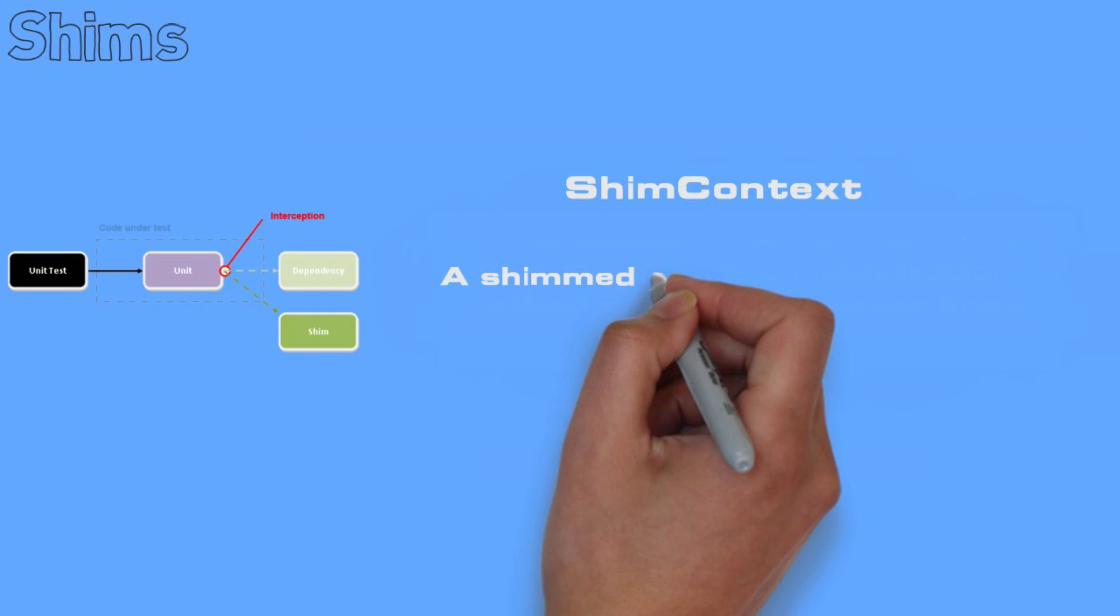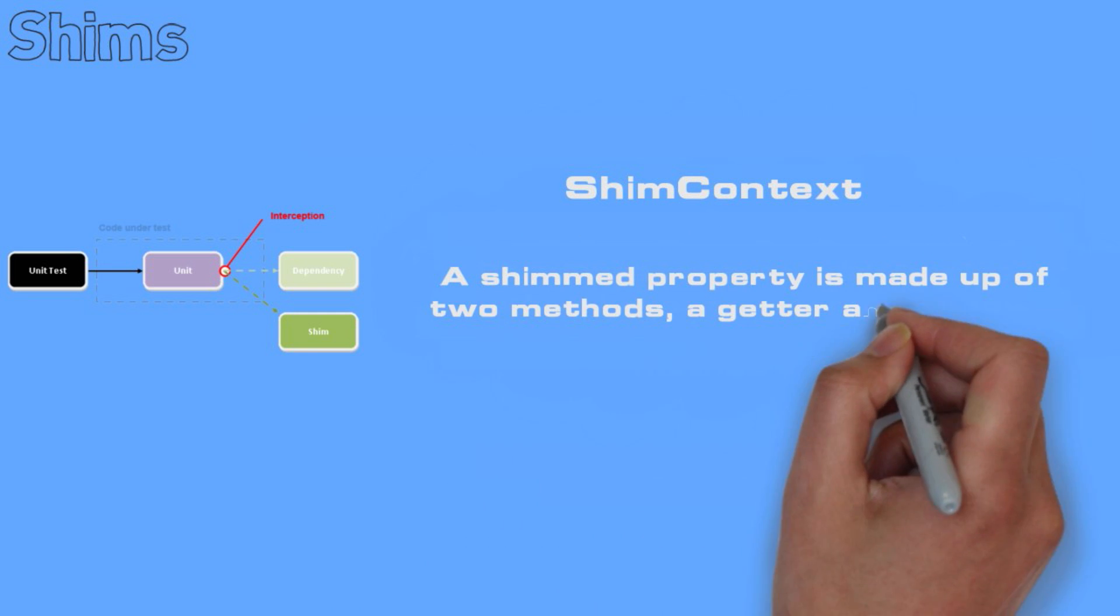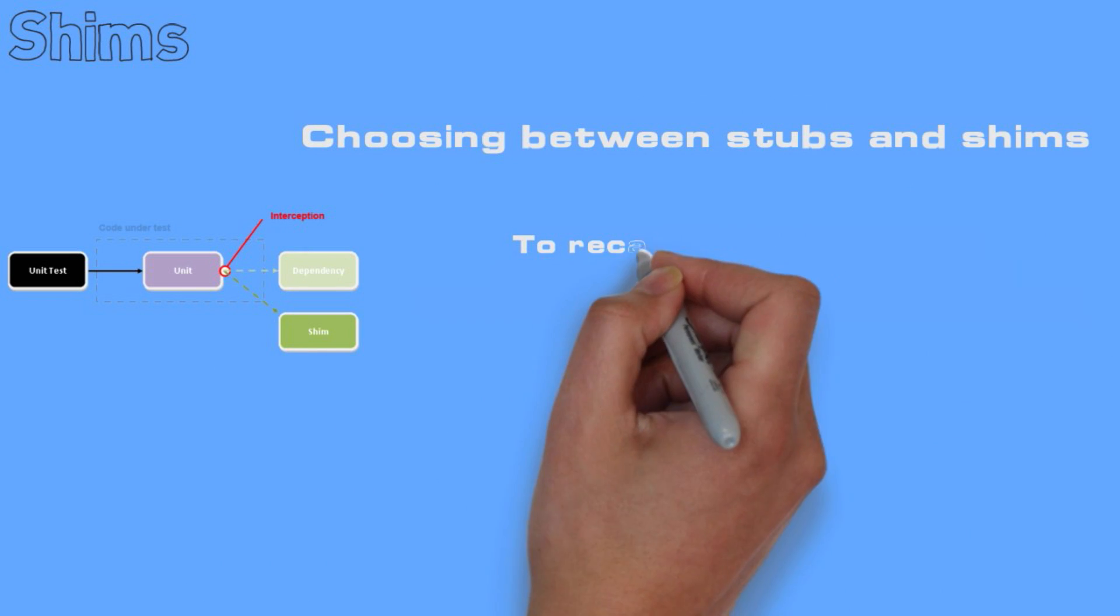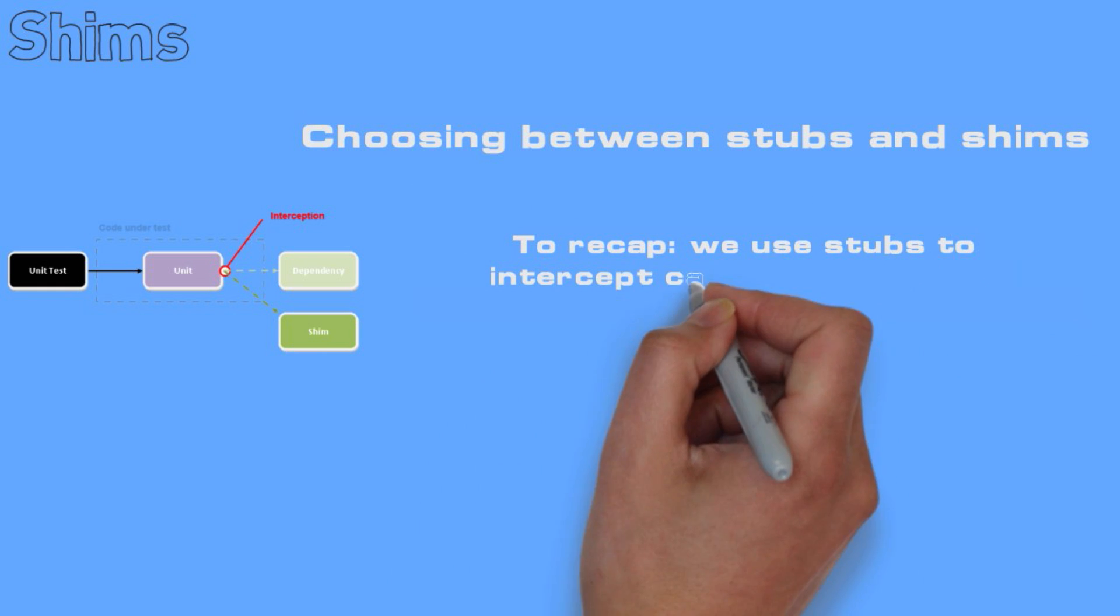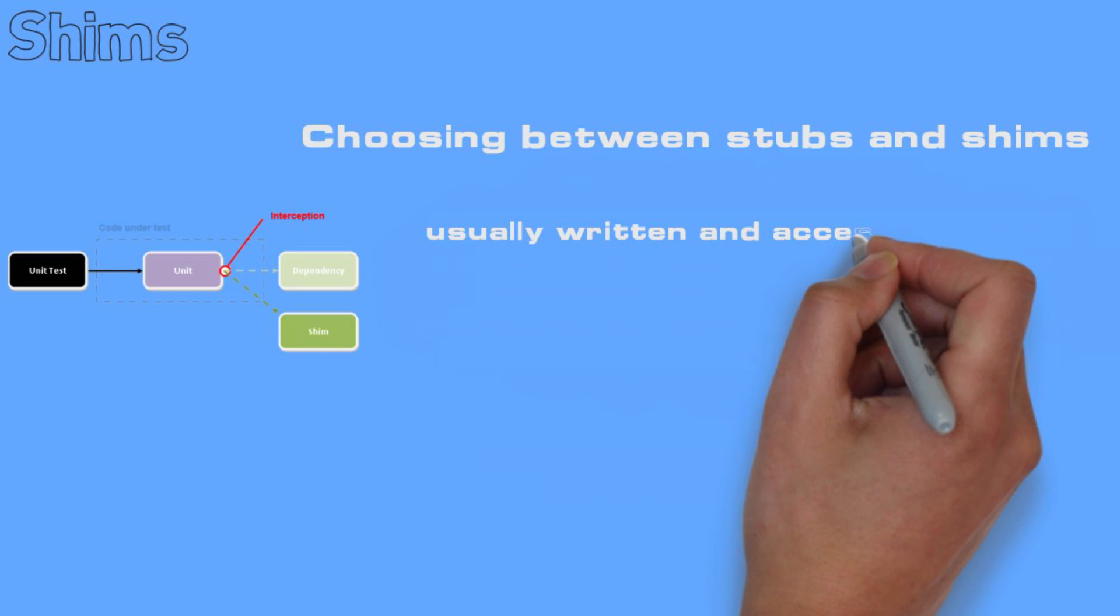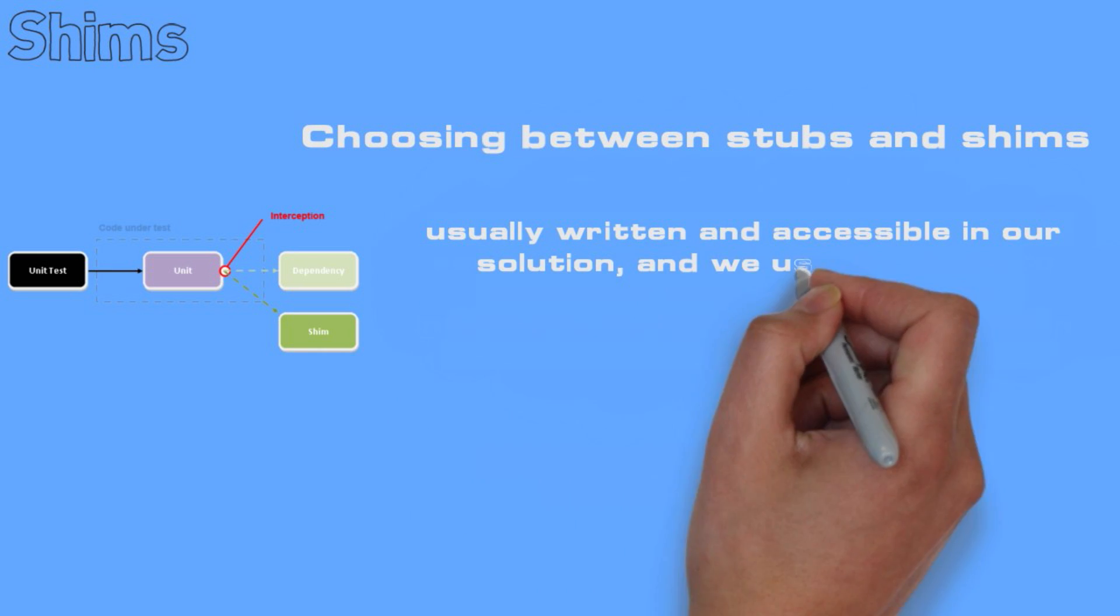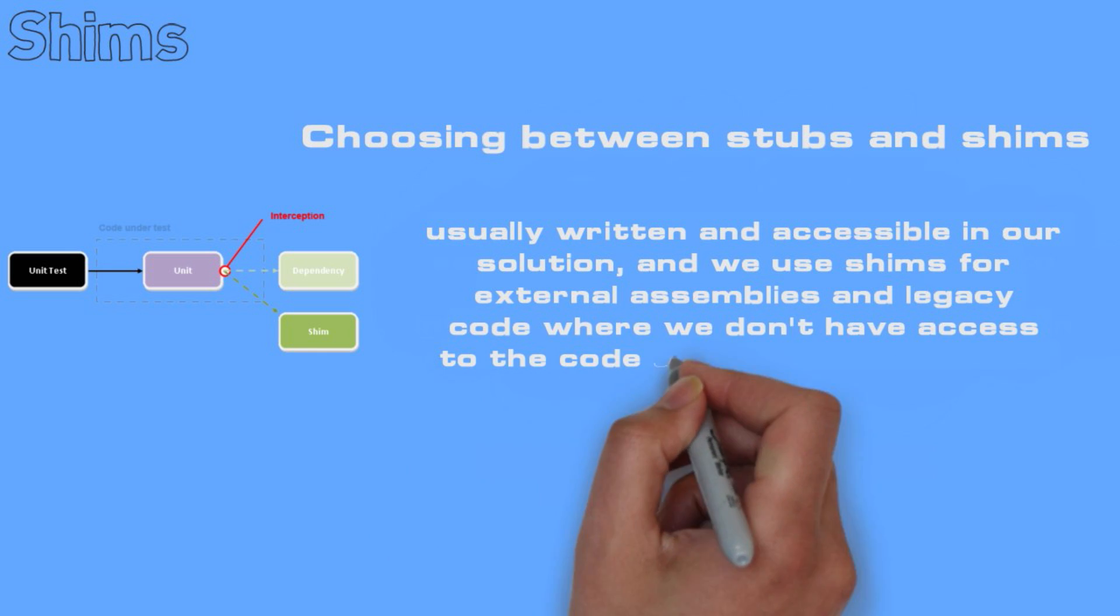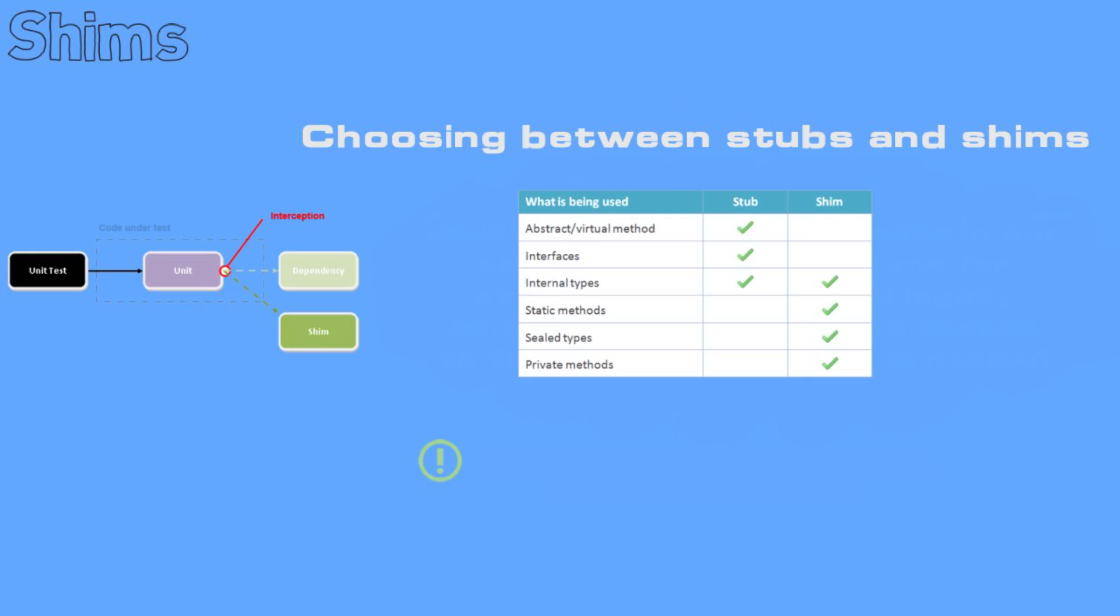A shim property is made up of two methods, a getter and a setter. Choosing between stubs and shims: To recap, we use stubs to intercept calls made through interfaces designed with testability in mind, usually written and accessible in our solution, and we use shims for external assemblies and legacy code where we don't have access to the code and the detour is needed. Note, stubs are generally much faster than shims.